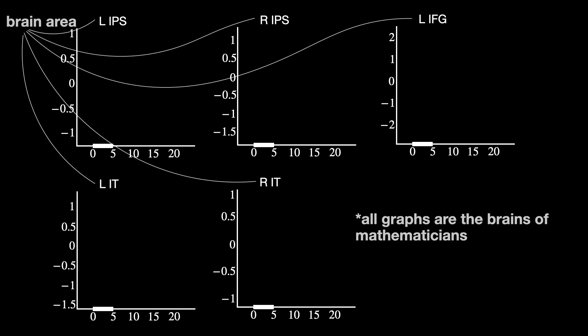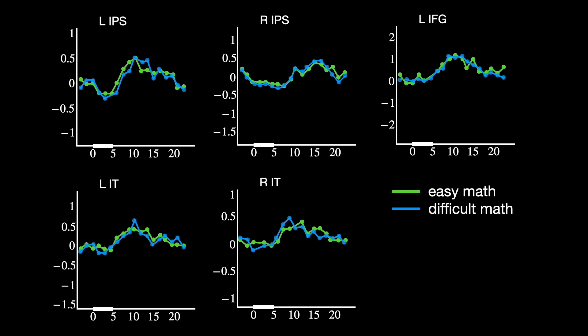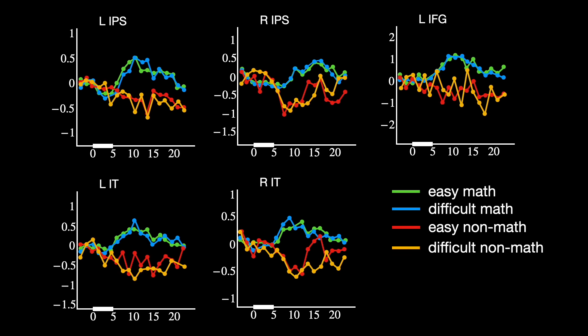As you can see on these graphs, the math-specialized network was always activated for both easy and difficult math problems, while a completely different general semantic network was activated for non-math questions, whether easy or hard. This rules out the maybe-they-were-just-thinking-harder explanation, and it confirms that these brain areas are content-specific.